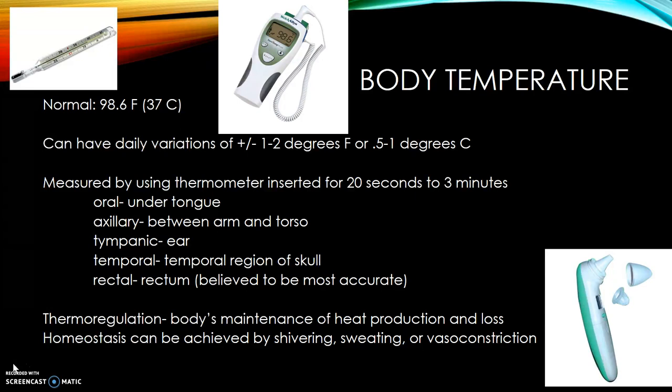it goes under the tongue. Axillary goes between the arm and the torso. Tympanic is used in the ear. Temporal is used in the temporal region of the skull. And the rectal is believed to be the most accurate. Thermoregulation is the body's maintenance of heat production and loss, and homeostasis can be achieved by shivering, sweating, or vasoconstriction.